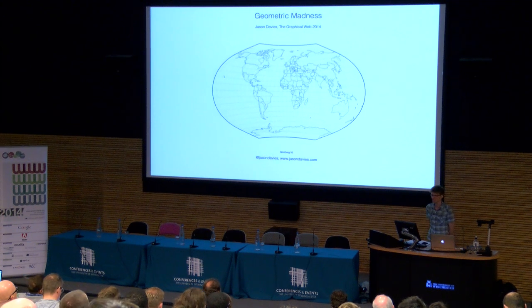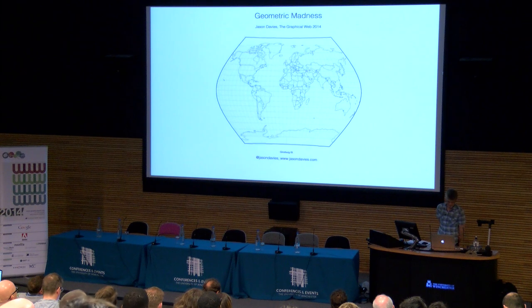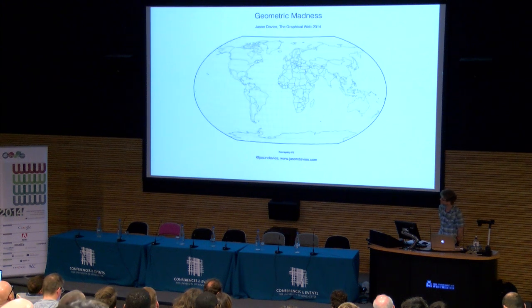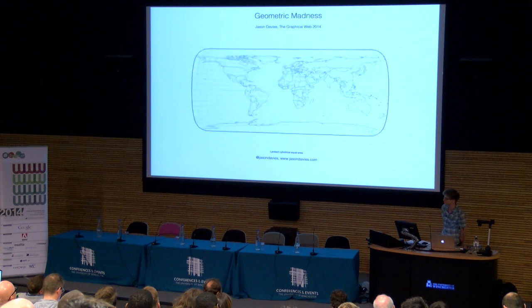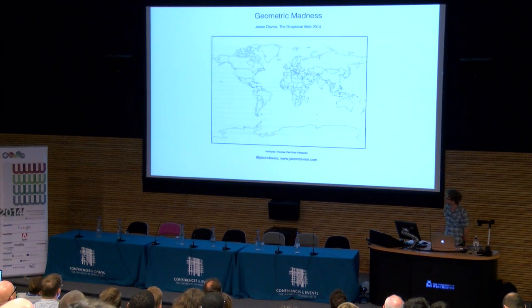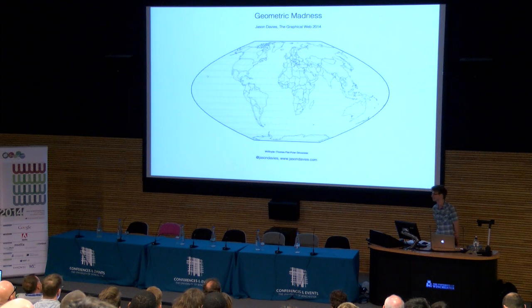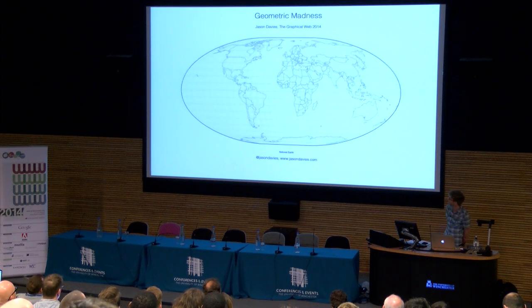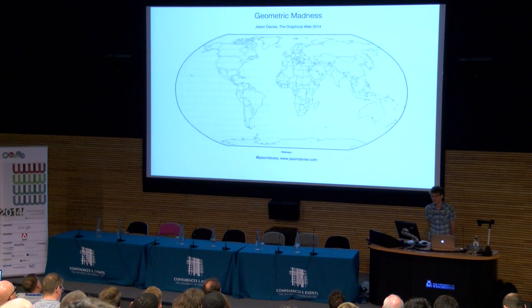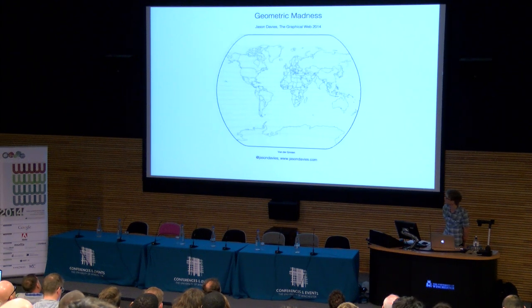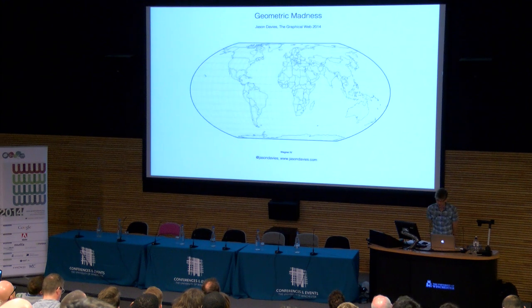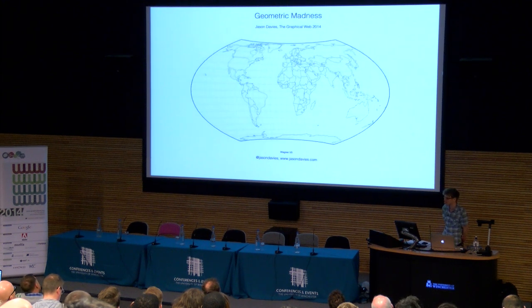Today I'd like to talk about something I call geometric madness — a vague title, but really intended to convey the state of mind I have when trying to solve problems involving spherical geometry. The demo you see before you is a fairly popular page on my site showing various map projections being transitioned. D3 has a large number of map projections, some fairly esoteric and some more useful than others. This shows how you can transition from one projection to another using a simple interpolation function.